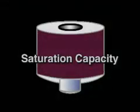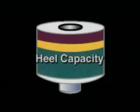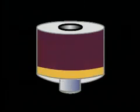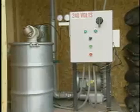Saturation capacity is the maximum amount of organic material the carbon can hold. Breakthrough capacity is the amount of organic material the carbon can hold before significant organic concentration begins to exit or break through the carbon bed. Heel capacity is the amount of organic material remaining in the carbon bed after it has been regenerated. Working capacity is the difference between breakthrough capacity and heel capacity, and represents the amount of organic material that can be absorbed in each operating cycle. A typical working capacity is 10 to 20 pounds of contaminant per 100 pounds of carbon.